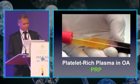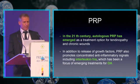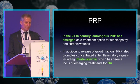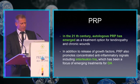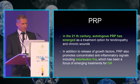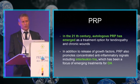Turning now to PRP: in the 21st century, autologous PRP has emerged as a treatment option for tendinopathy and chronic wounds. In addition to releasing growth factors, PRP also promotes concentrated anti-inflammatory signals, including interleukin-1 receptor antagonist, which has been a focus of emerging treatments for osteoarthritis.